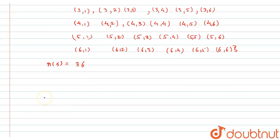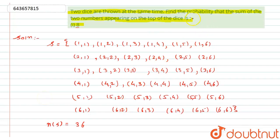Now here what is stated is that the sum of the two numbers appearing on the top of the dice should be 8. So if I see here, which numbers can give me sum 8? So this (3,5) will give me 8...